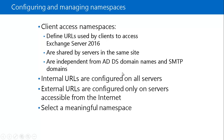You should select a meaningful namespace because clients might use it to access Outlook over the web. For example, webmail.techijack.com would be a common namespace. If there are multiple sites with Exchange Servers, you might have namespaces based on physical location, such as webmail.eu.techijack.com and webmail.us.techijack.com. When multiple Exchange Servers in a site share the same namespace, you need to provide a load balancing mechanism, which will be discussed in later videos.